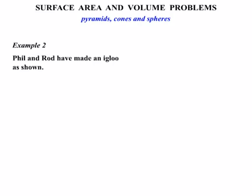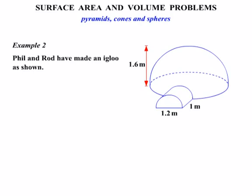Let's have a look at a second example now. Phil and Rod have made an igloo as shown. We can see the dimensions for the igloo there, and we're asked to find the volume of the igloo to the nearest cubic meter.